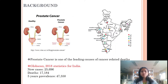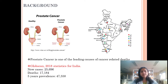Before moving ahead, I would like to give a brief background so that everyone stays on the same page. The prostate gland is a part of the male reproductive system and, as you can see from the left picture, it lies behind the bladder around the urethra. Whenever there is any abnormality, it eventually leads to prostate cancer.